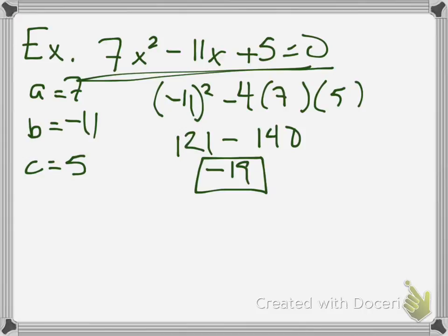Now, based on that discriminant, what kind of answer am I getting? Or what is the nature of these answers? What kind of answers would this quadratic give me? Well, they would give me two complex roots, which is basically two imaginary.